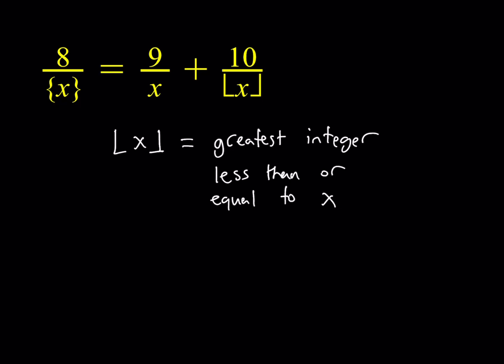For example, the floor value of pi is going to be 3, because pi is 3.14. But if you look at negative pi, that's kind of interesting — it's not going to be negative 3, because negative pi is negative 3.1 something, so it's going to be negative 4. The floor value is always less than or equal to x.